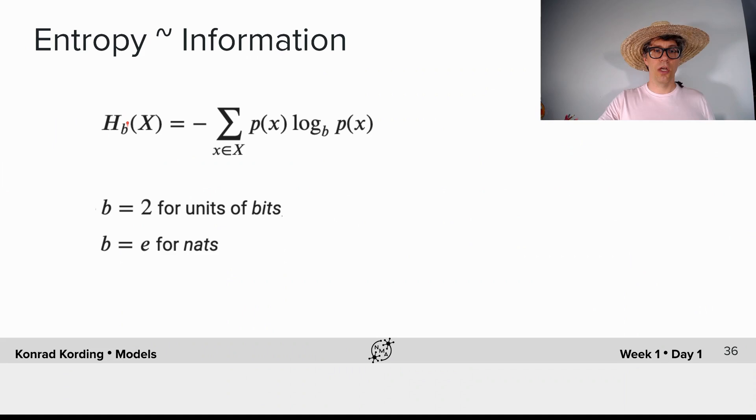The entropy here to the base b is the sum of all possible values, in this case the sum of all possible inter-spike intervals, times the probability that this inter-spike interval will occur times the log to the basis b of that probability. And there's two bases that are commonly used. There's e being used for nats and 2 is being used for bits, which you most surely know from interacting with your computers.